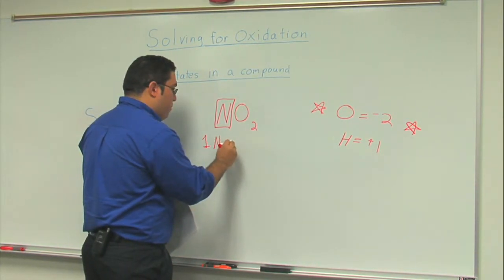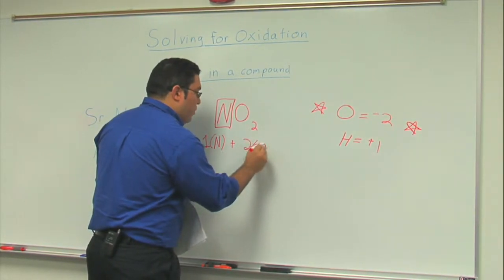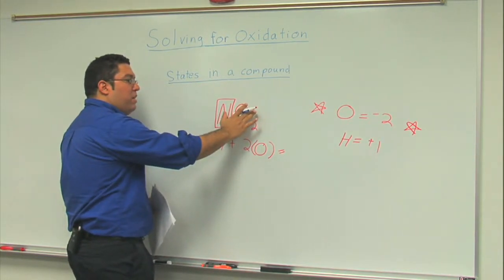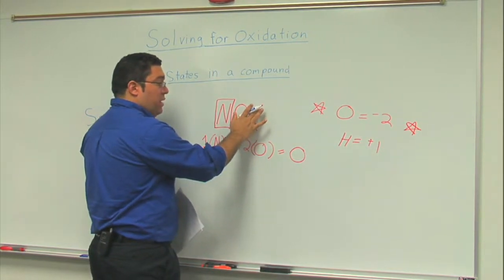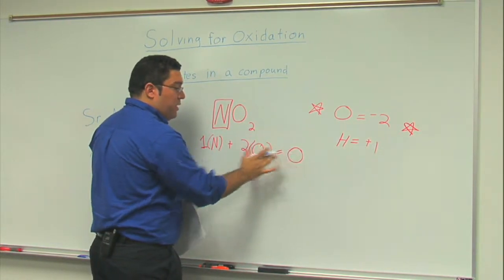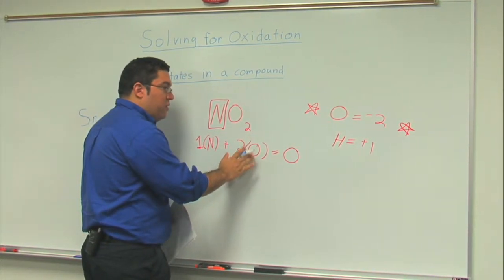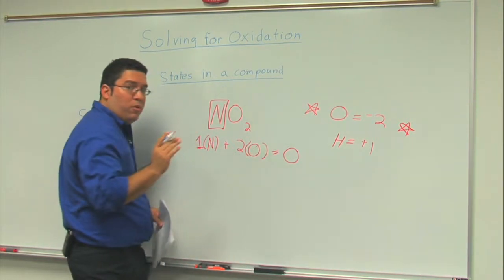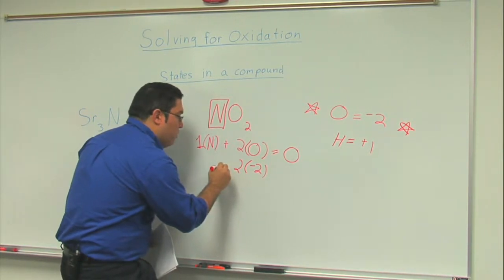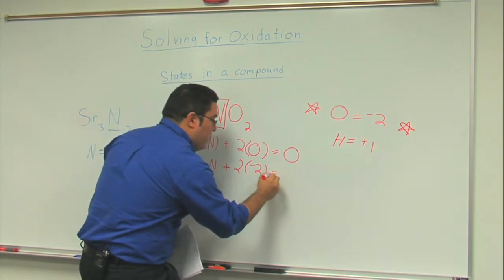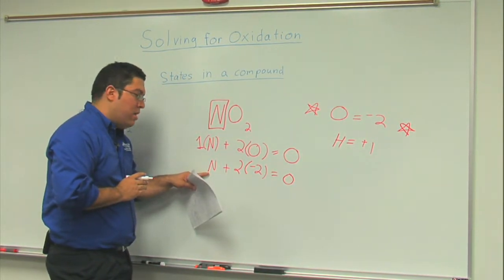If you have one nitrogen here plus two oxygens, we can see that the overall charge, since there's nothing present here, is zero. If there were a charge here like a negative one or negative two, I would plug that in here on the right side. Now I plug in the charges that I'm aware of - oxygen is almost always negative two, so I plug that in. So then it's two times a negative two. Here I have nitrogen and now I can solve this just like a regular algebra equation.